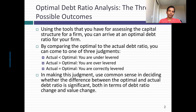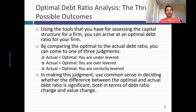One of three things is going to be true. Either your company is one of those very unusual companies that is at its optimal, in which case do no harm — let it go. Or it can be different from its optimal in one of two ways: either the actual debt ratio is much below the optimal, in which case the company is under-levered, or the actual debt ratio is well above the optimal, in which case the company is over-levered.